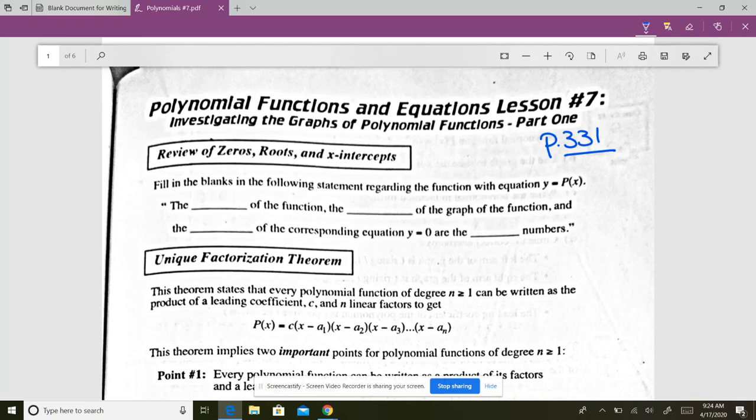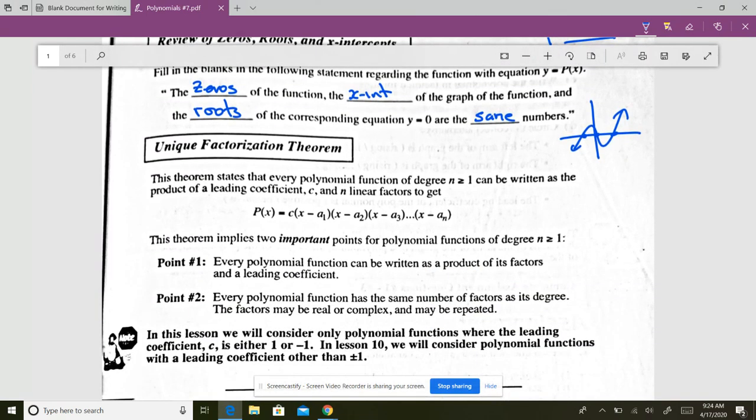Quick review from the last lesson. If you remember, the zeros of a function, the x-intercepts of a graph, and the root of the equation y equals zero, they're all the same numbers.